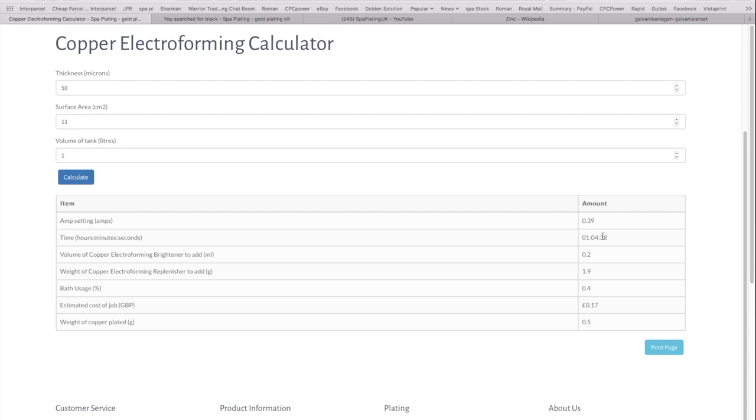Then there's the replenisher what you must put in for the bright copper electro forming. Because you take stuff out of the solution, you need to put it back in. Or you don't need to do this if you want to plate it out completely and have nothing left in the solution.